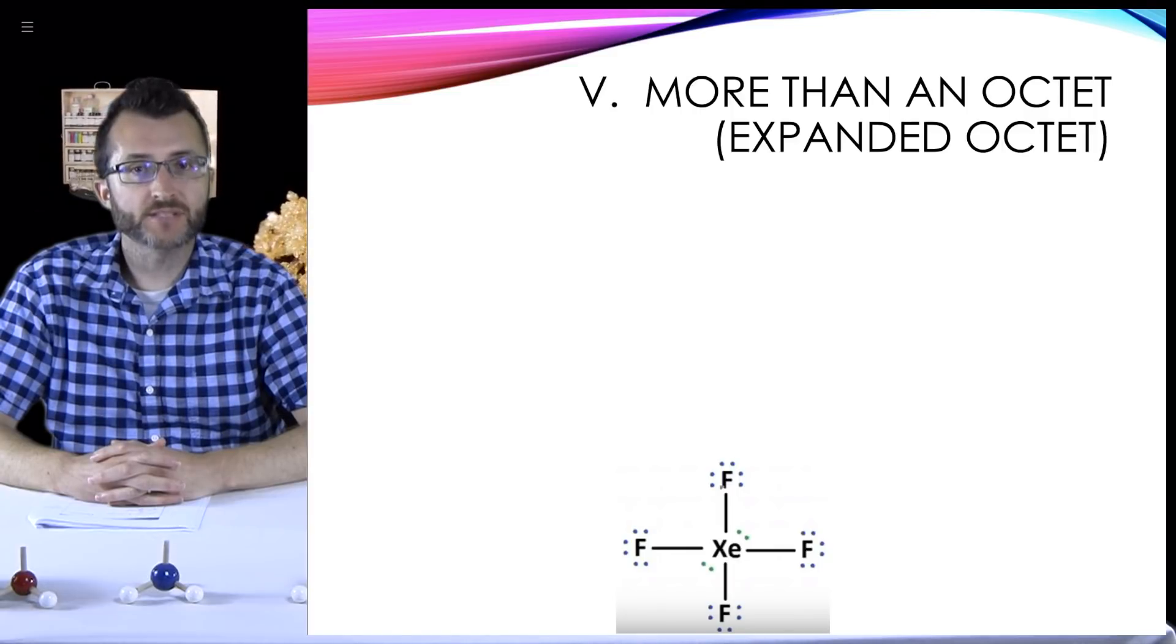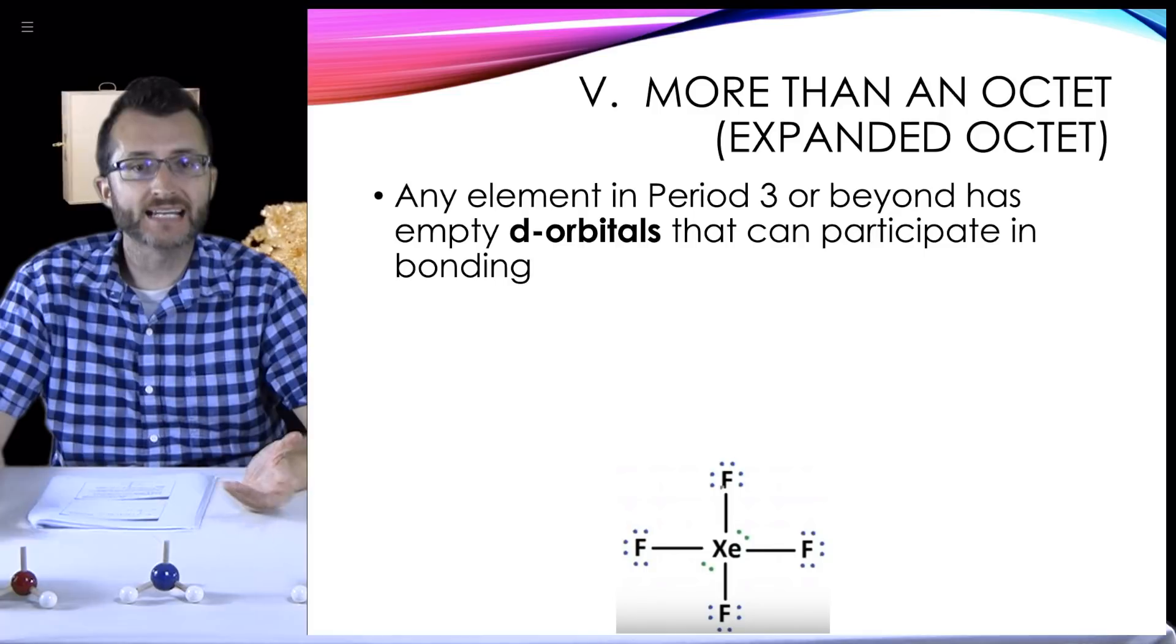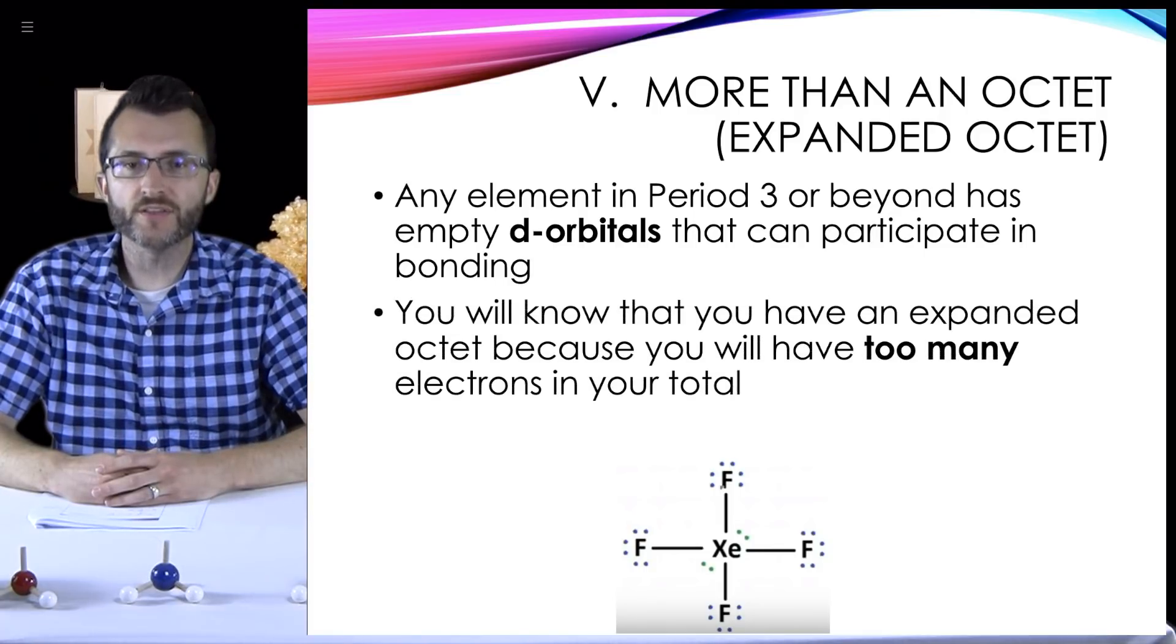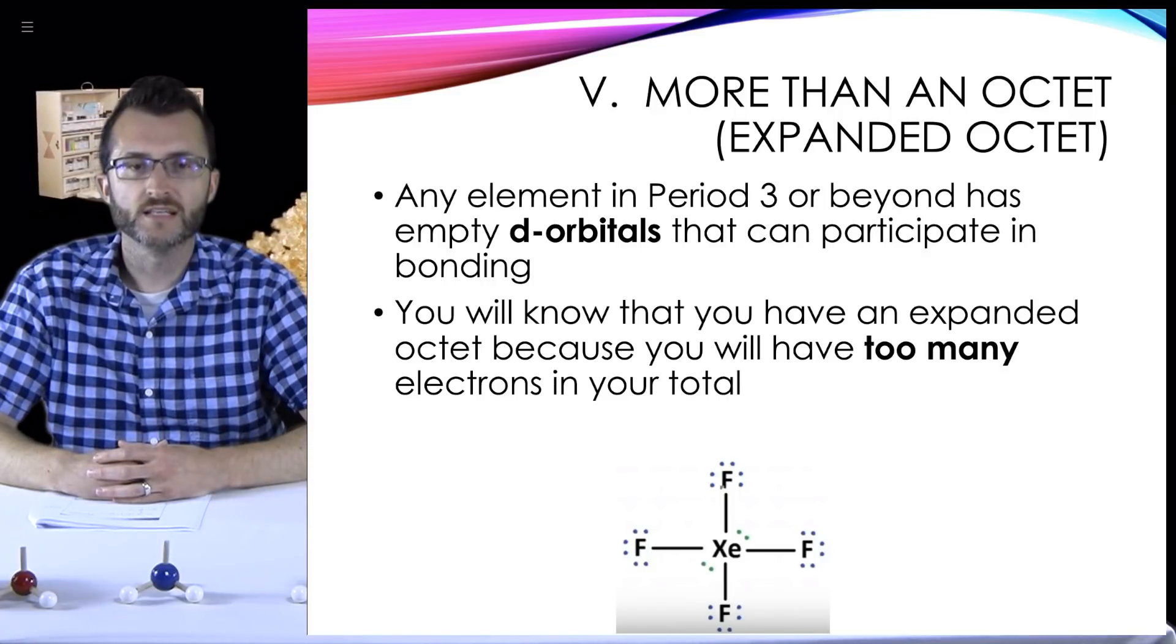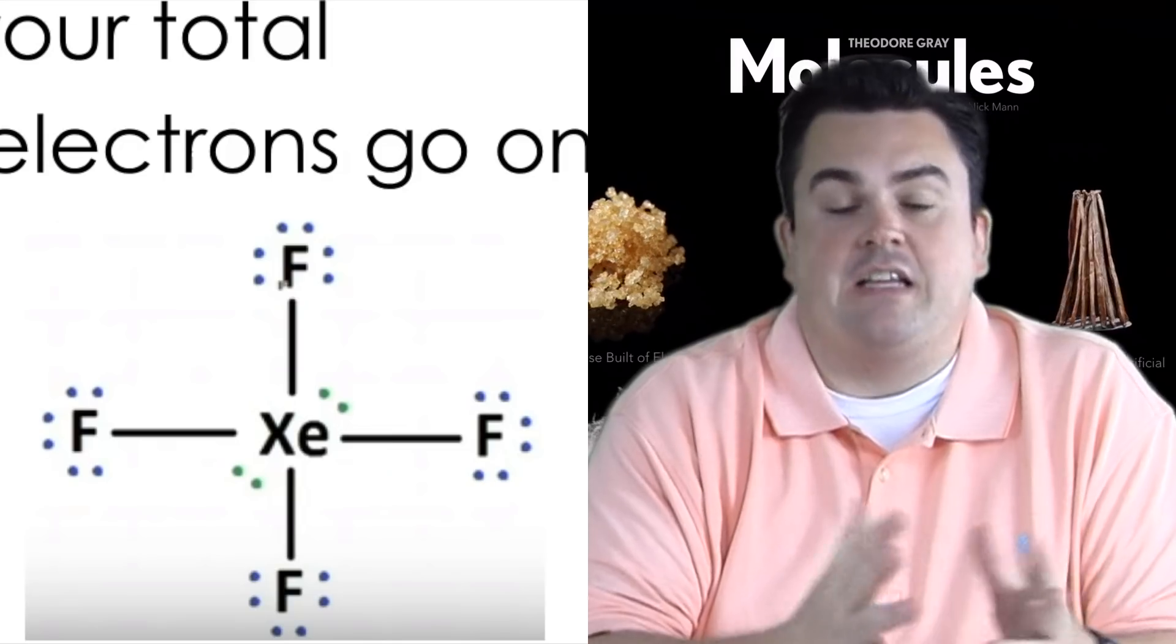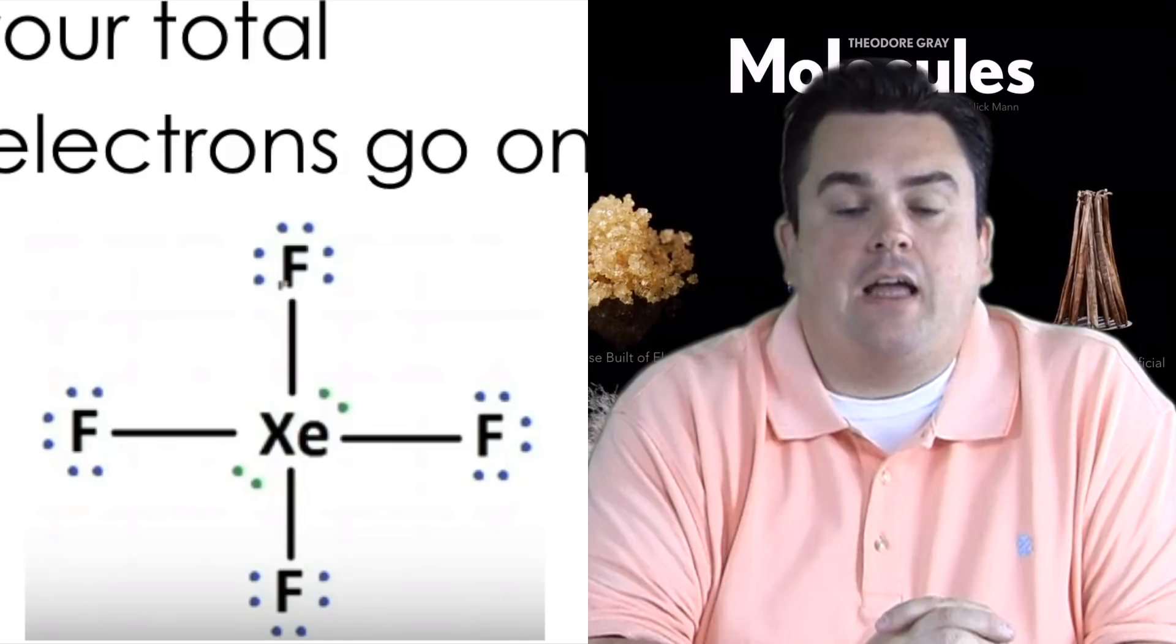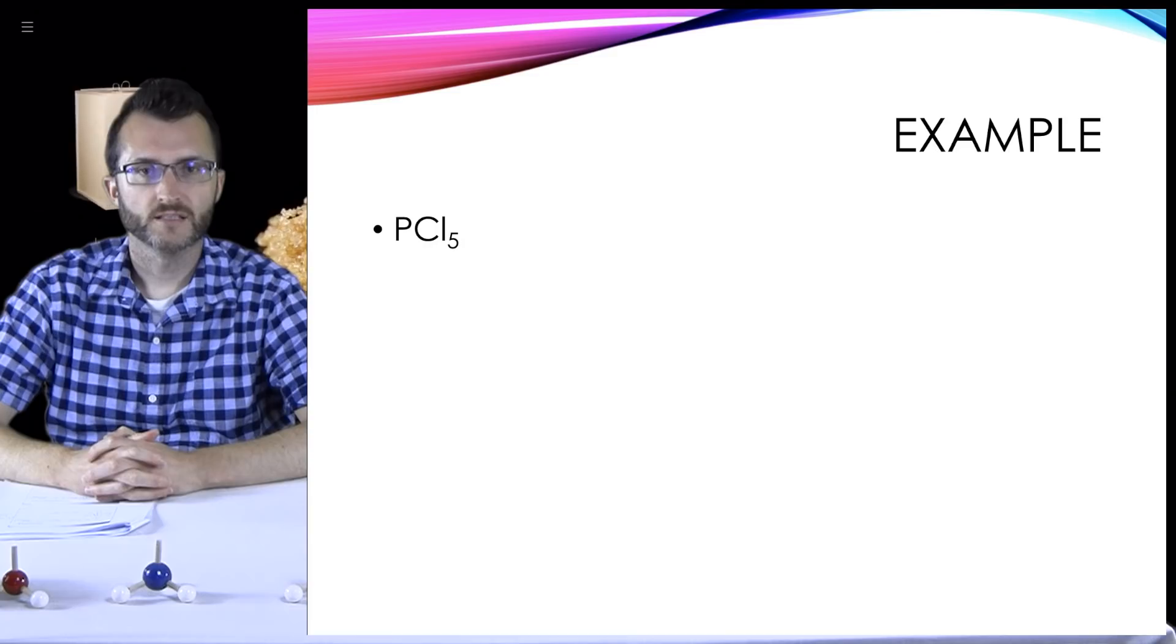More than an octet, sometimes called an expanded octet. Any element in period three or beyond has empty d orbitals that can participate in bonding. You will know that you have an expanded octet because you will have too many electrons in your total. Extra bonds or electrons will always go on the central atom. If you take a look at our example here, we've got xenon in the middle of those four fluorine atoms. And xenon actually has 12 electrons around it.